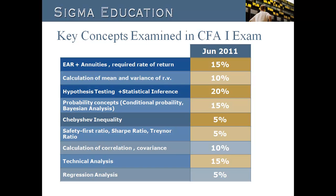Another important concept that appeared not only in quantitative methods, but also in equity investment and portfolio management, is the calculation of covariance and correlation. Definition of correlation and covariance, as well as their calculation, have been frequently tested in CFA Level 1. It can be up to 8–10 questions derived from these sessions, so candidates should pay special attention to both concepts and calculations.